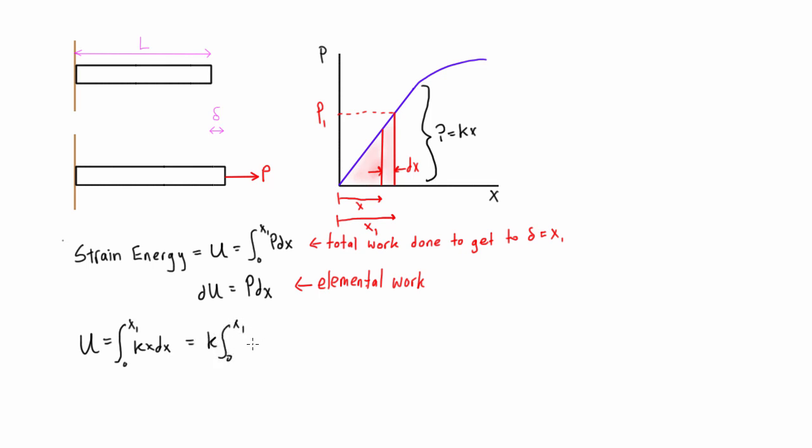So from 0 to x1 we have x dx and this simplifies just to 1 half Kx squared. Now we should put in the subscript here of x1 because we substituted in here x1 and 0, and the 0 obviously just disappeared. So now we have x1.